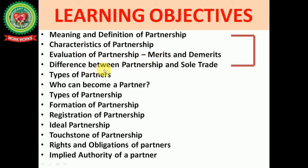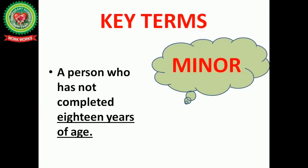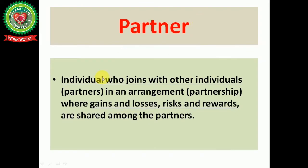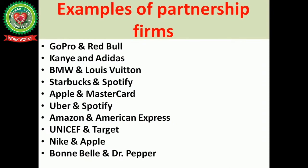First we will discuss our key terms. The first term is 'minor' — a person who has not completed 18 years of age is called a minor. Next is 'partner' — an individual who joins with other individuals in an arrangement where gains and losses, risks and rewards are shared among the partners.